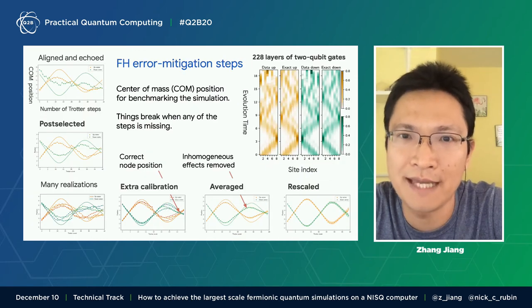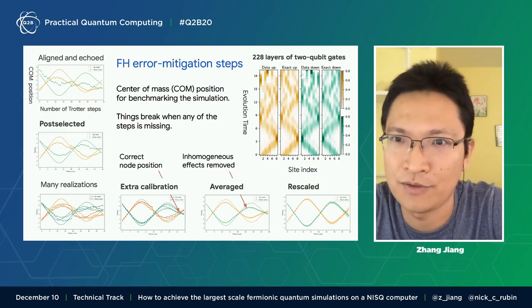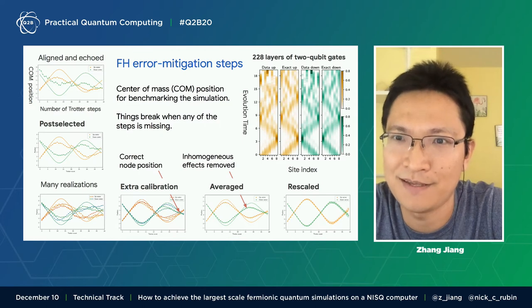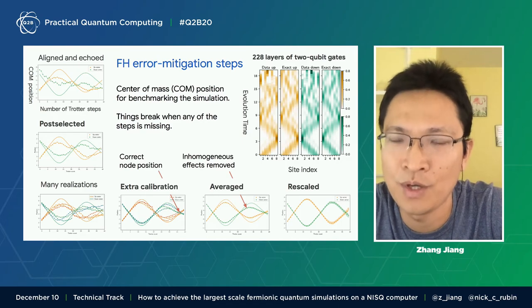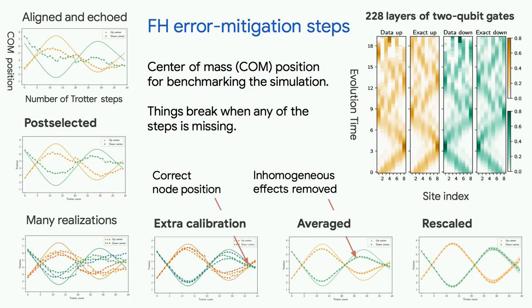So after creating the circuit, you can run your algorithm on our device. This is an example for the Fermi-Hubbard model, where we create a wave packet on the spin-up state and the spin-down states. There's no interaction between them — the reason I used the two spin states is just to show that we can calibrate away the crosstalk.